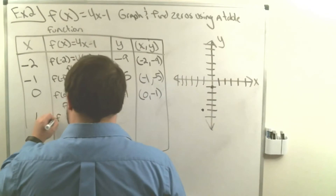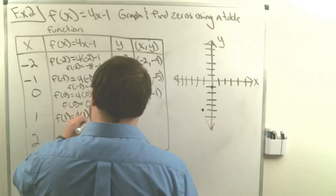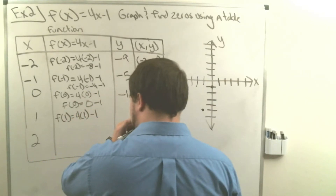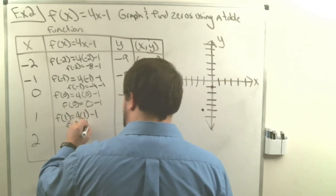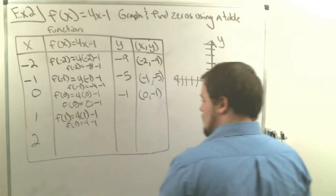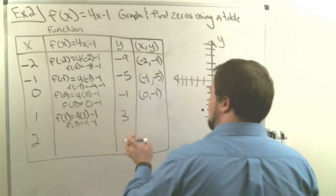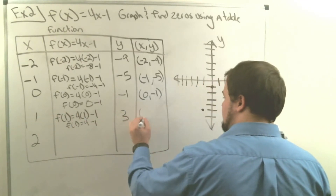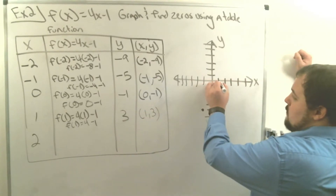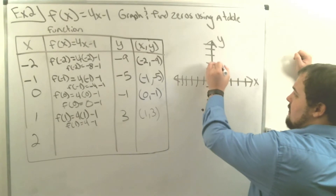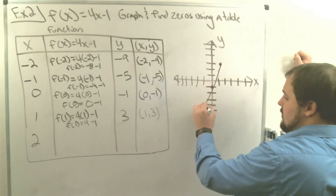Let's do 1. The function of 1 equals 4 times 1 minus 1. Four times 1 is 4, and 4 minus 1 is 3. So plugging in 1 gives us 3. Our coordinate pair is 1, 3. We go over 1 on the x-axis and up 3 on the y-axis and place a dot. We now connect our three dots to create the line.